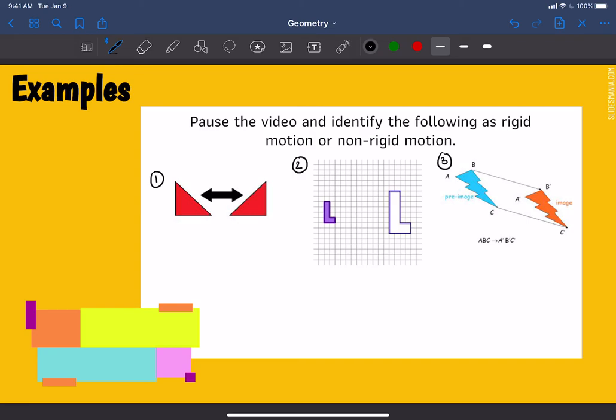All right. So the very first one, as you can tell, the size of the triangle did not change. Size stayed the same. So this is a rigid motion. This is a rigid motion. And specifically, this is a reflection.